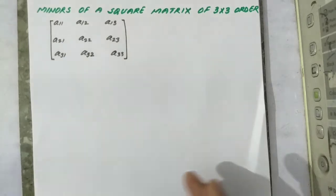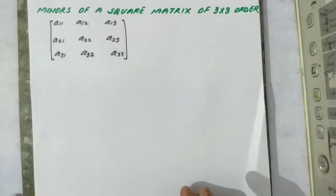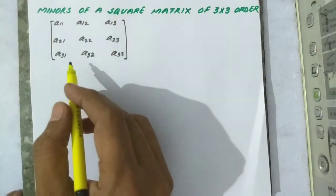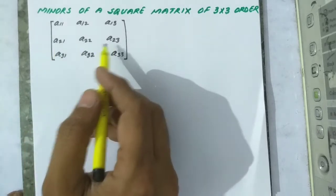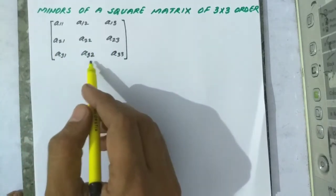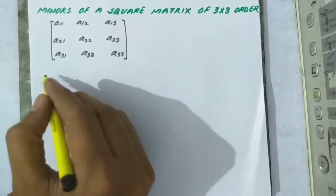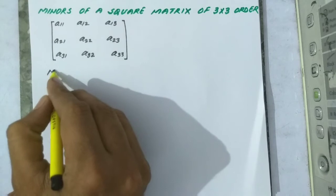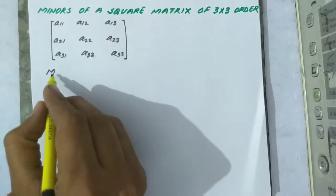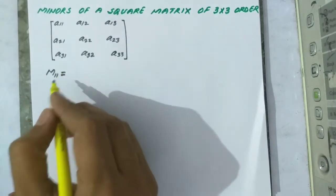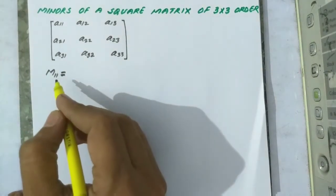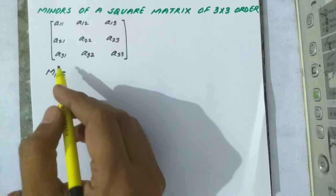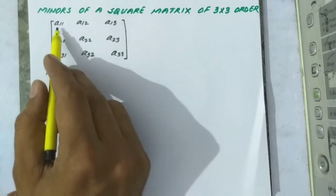Now let us discuss the method to find minors of a square matrix of 3 by 3 order. We have taken an arbitrary matrix: a11, a12, a13, a21, a22, a23, a31, a32, a33. The minor of the first element, the minor of a11 denoted by m11, is equal to the difference of the cross multiplication of the four elements left after erasing the column and the row in which a11 lies.